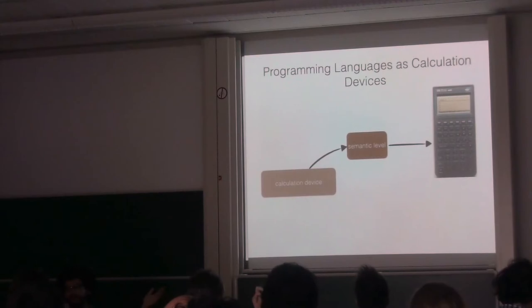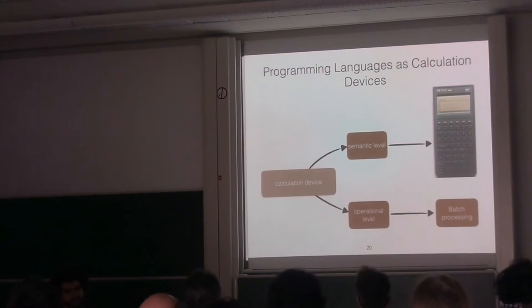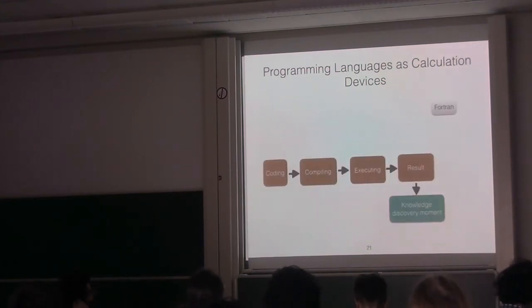In a semantic level, we mean what you can do with a programmable calculator. In an operational level, we mean batch processing. This talk is about the uses in science. If you think of Fortran, for instance, the following workflow was very common: you first code your problem, then you compile, you execute, and you get your result.